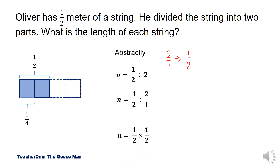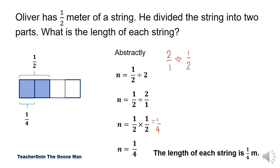So I have one half times one half. The division symbol now becomes multiplication. After I reciprocate the divisor, I proceed to multiplication of fractions. One times one is equal to one, all over two times two is equal to four. So n is equal to one fourth. The length of each string is one fourth meter.